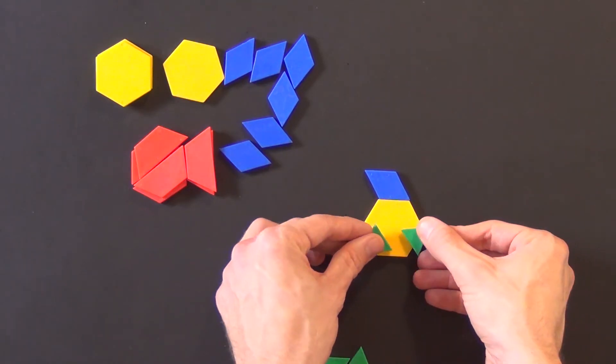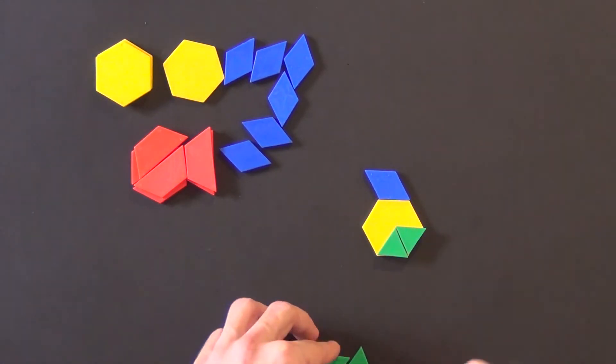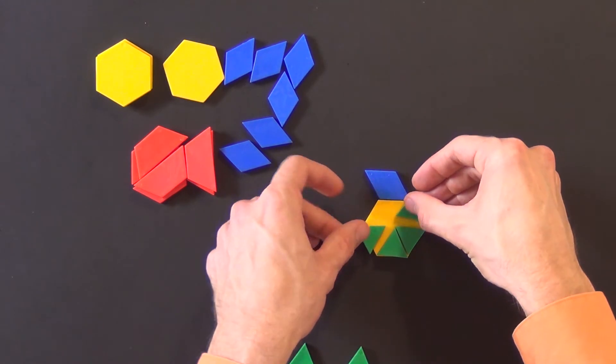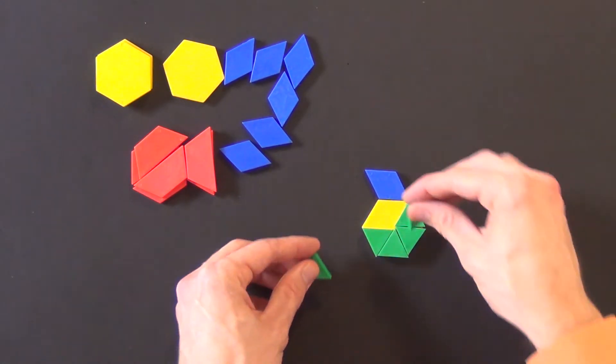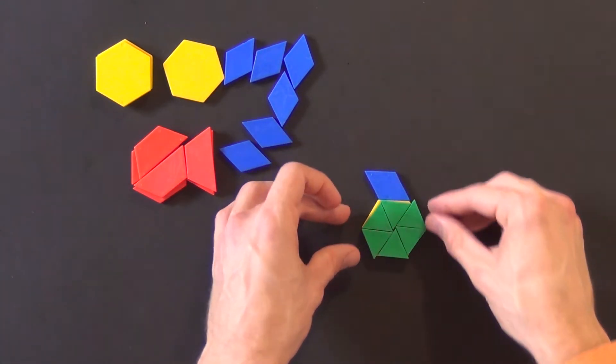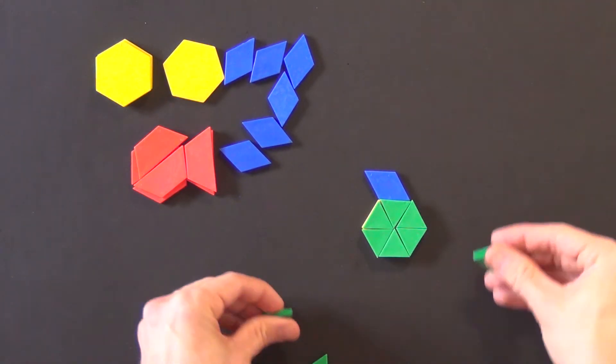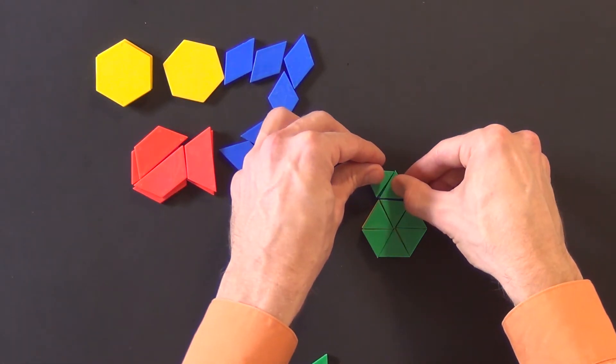Then each of the green triangles would represent an eighth because it takes eight of those green triangle pieces to cover completely my whole amount.